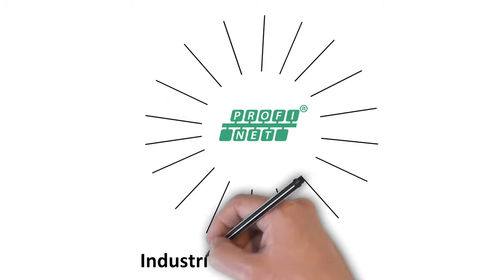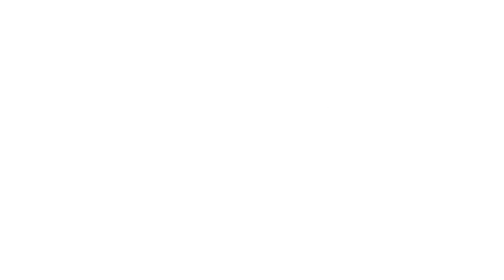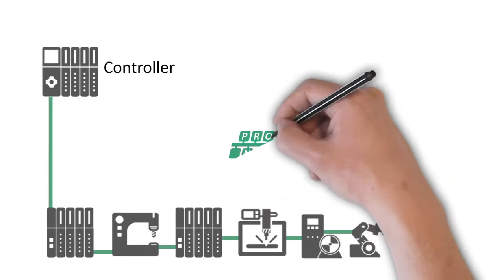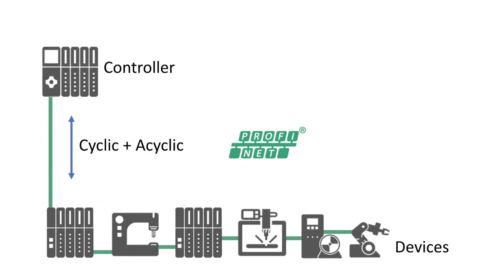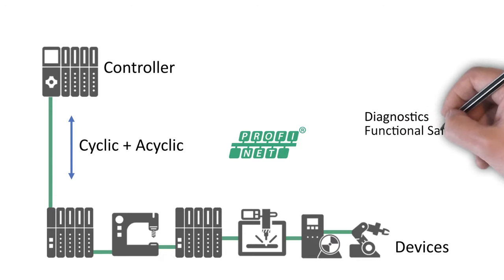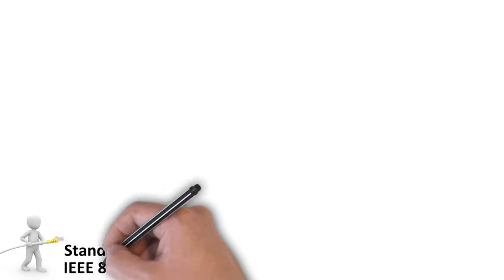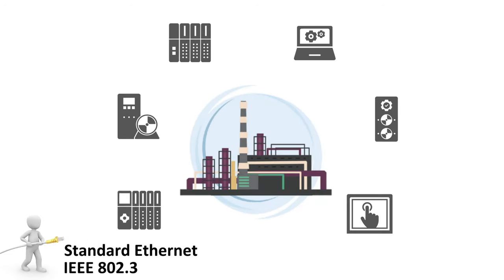Profinet is an industrial Ethernet solution. It is a communication protocol designed to exchange data between controllers and devices in an automation setting. Profinet defines cyclic and acyclic communication between components including diagnostics, functional safety, alarms, and additional information. To link all of those components, Profinet employs standard Ethernet for its communication medium. If you encounter a Profinet network, you will notice the Ethernet cables connecting Profinet components.